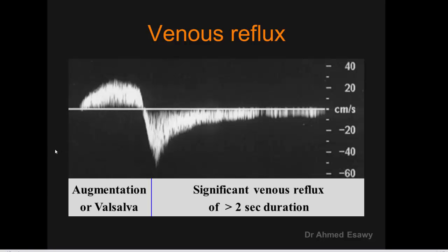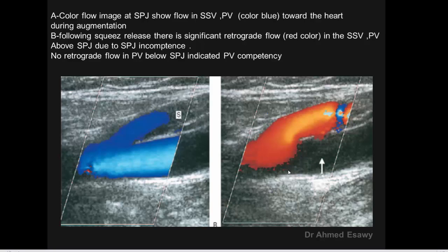This color flow image shows the saphenopopliteal junction — flow in the short saphenous vein coming to the junction with the popliteal vein toward the heart during augmentation. During squeeze-and-release, there is significant retrograde flow in the short saphenous vein and the popliteal vein above the saphenopopliteal junction due to saphenopopliteal incompetence. No retrograde flow in the popliteal vein below the junction indicates popliteal vein competency.